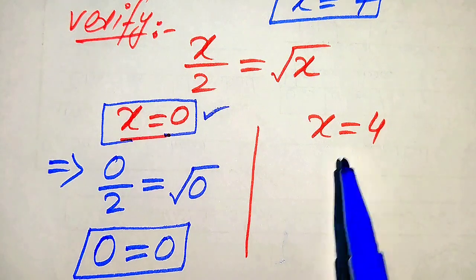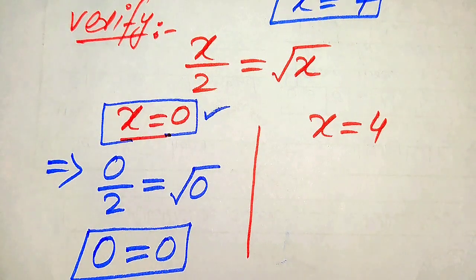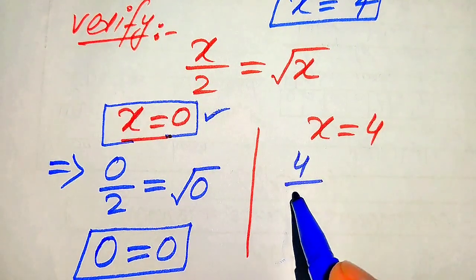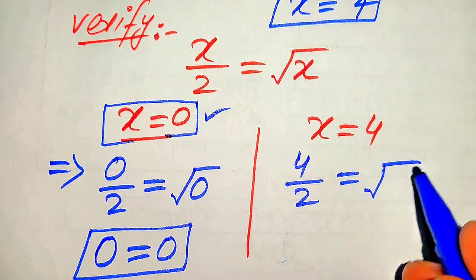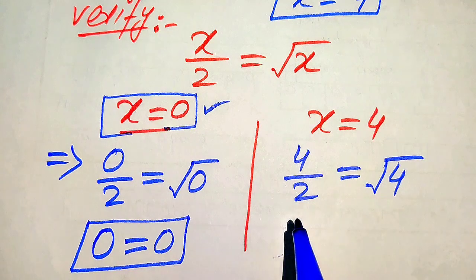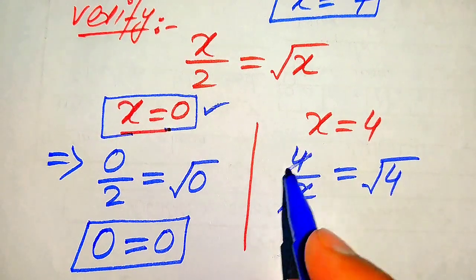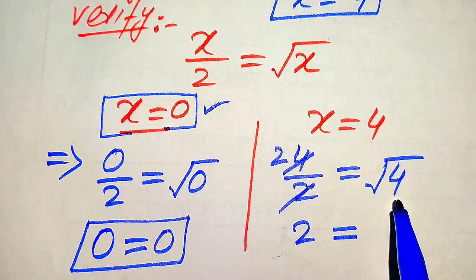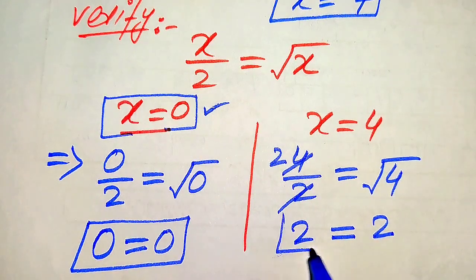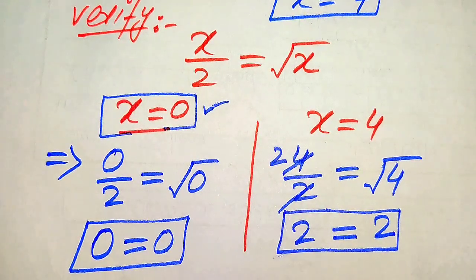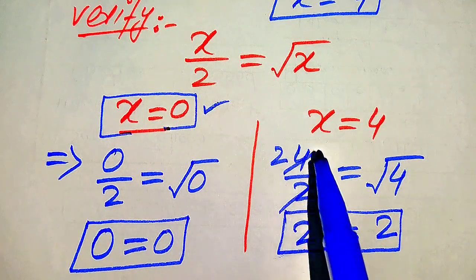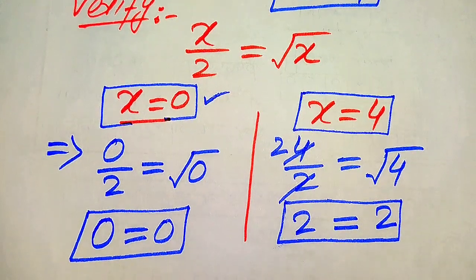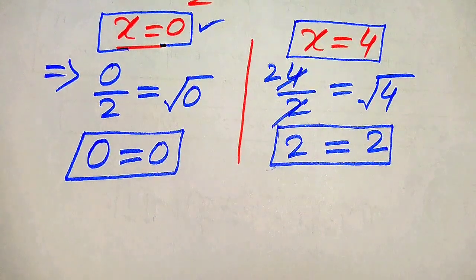Next we verify the second value x equals 4. Substituting into both sides gives 4 over 2 equals the square root of 4. Simplifying, 4 over 2 equals 2, and the square root of 4 is also 2. So the left hand side equals the right hand side, meaning x equals 4 also satisfies the equation. These are the final answers from the first method: x = 0 and x = 4.